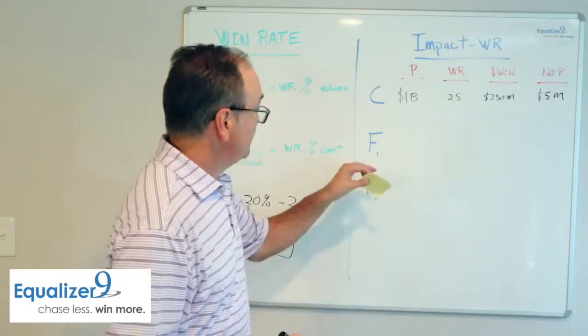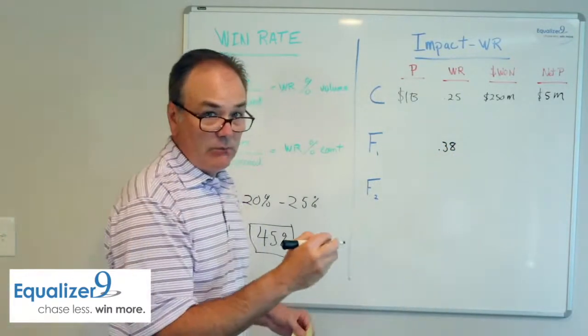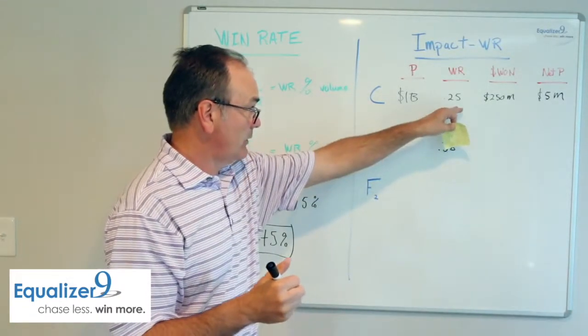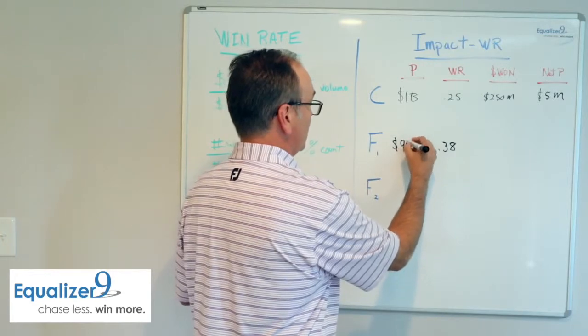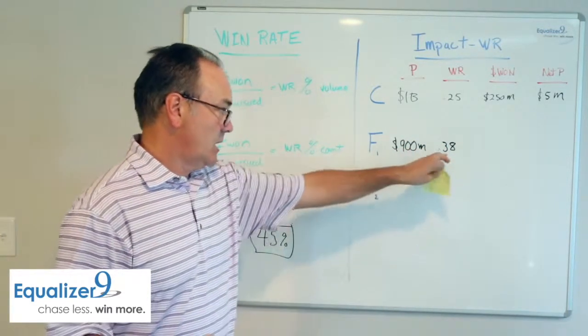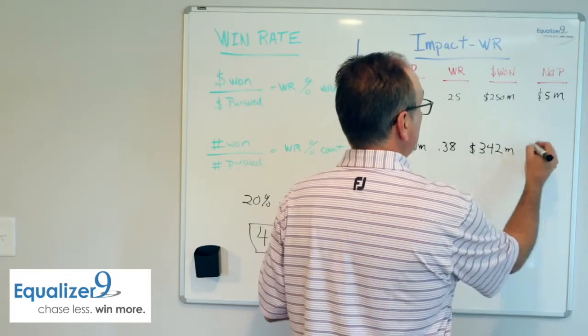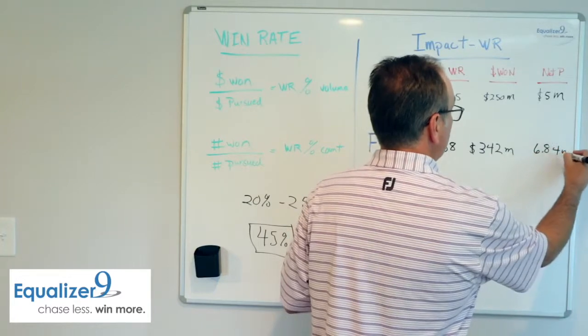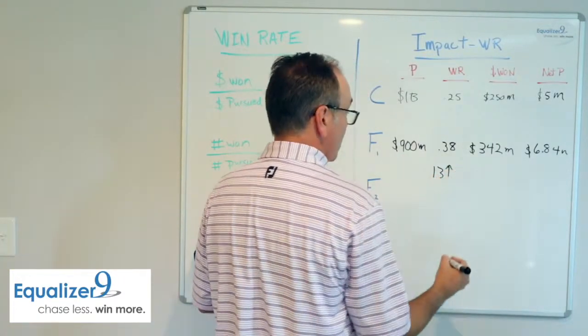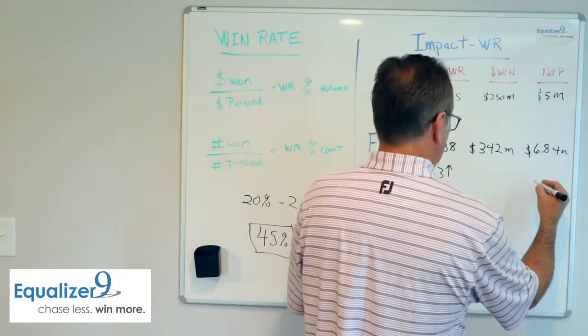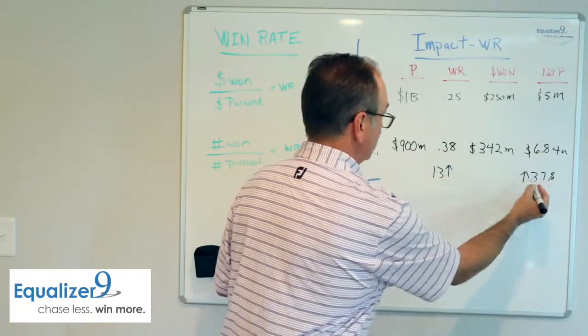Now, so let's say future state that we are good at manipulating our win rate to our favor, and we're able to move it from 0.25 to 0.38. So we move it 13% in our favor. We increase our win rate from 25% to 38%. Now, to do that, in all likelihood, we're going to pursue less. We're going to chase less, and we're going to win more. So we're only pursuing $900 million at a 38% win rate. That means our total won went up to $342 million. 2% of that equals $6.84 million in profitability. Now, do some quick math right here. That means our win rate went up 13%, and it means that our net profitability went up by 37%. Now, I like that math. Increase this 13%, that goes up 37%.